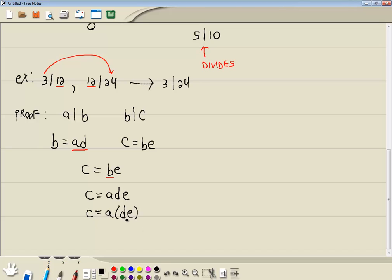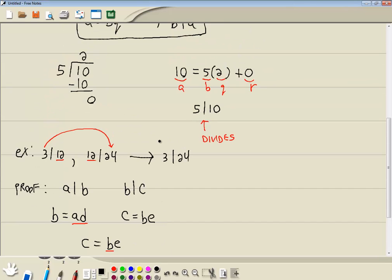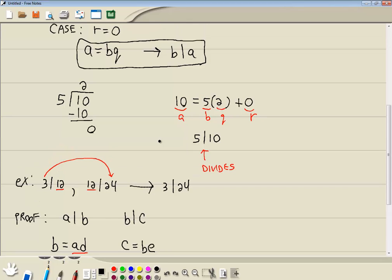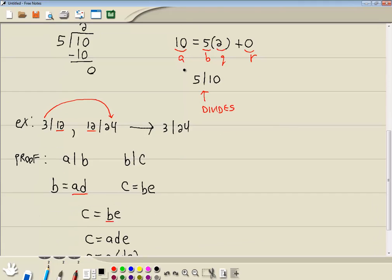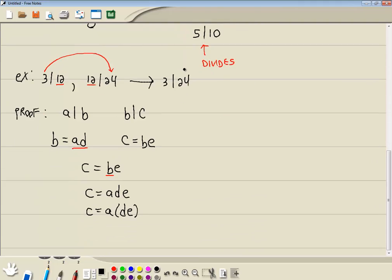Now, D and E are just integers. So this would be like 2 times 3. So integer times another integer is just an integer. Well, using the same concept here, we can go backwards. Since DE is just an integer,